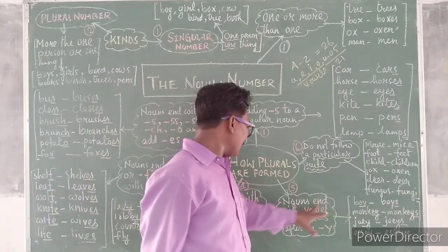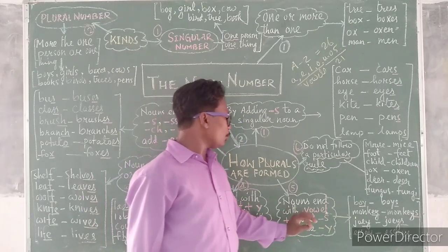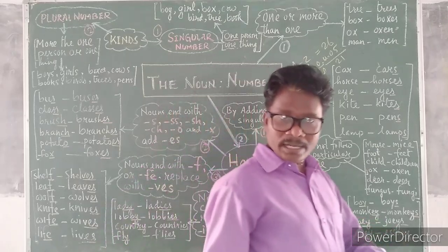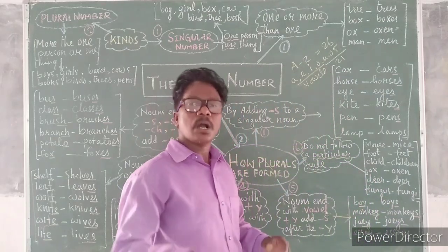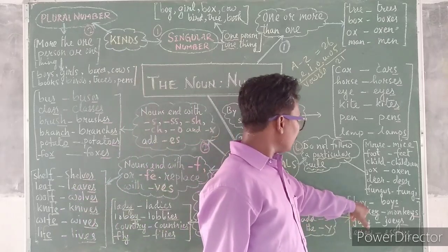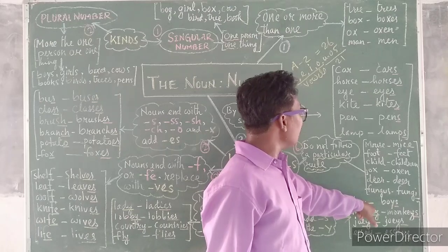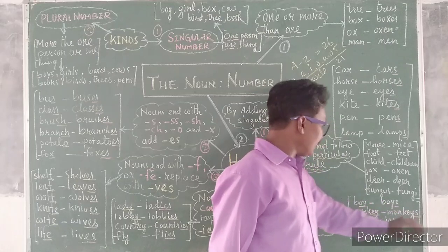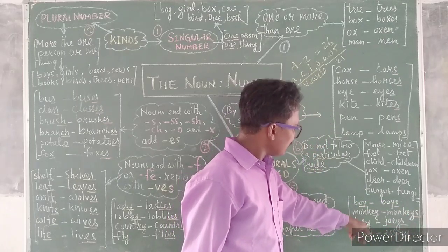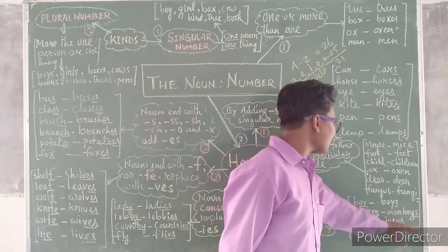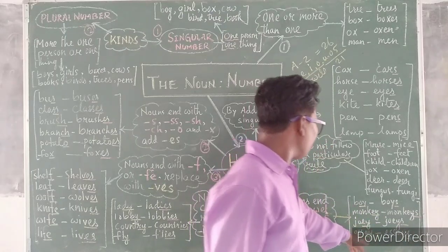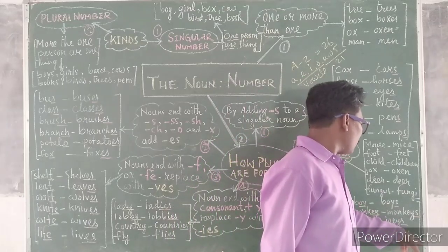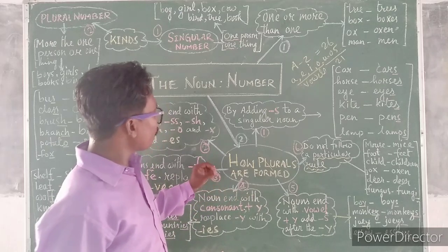Fifth: a noun ends with a vowel and Y — we add S after the Y. Examples: boy — O is a vowel and Y, so we add S, giving boys. Monkey — vowel E and Y, giving monkeys. Joy — O is a vowel and Y, giving joys. So this is the fifth way we form a plural number.